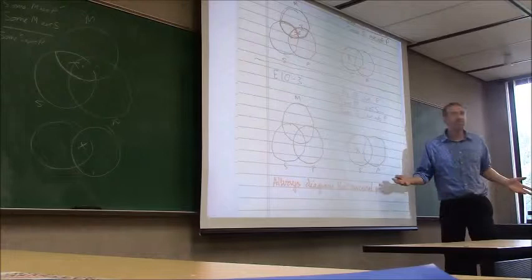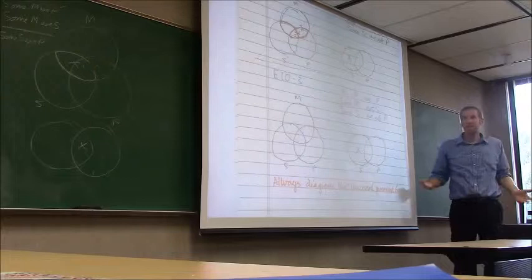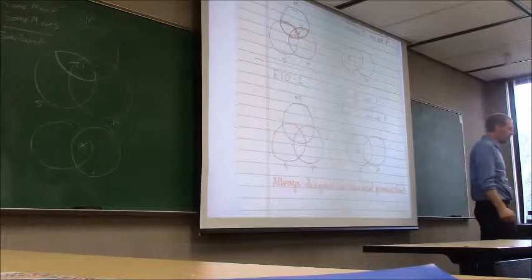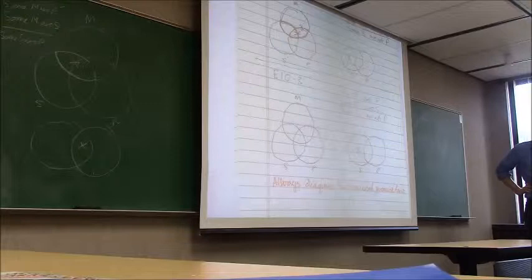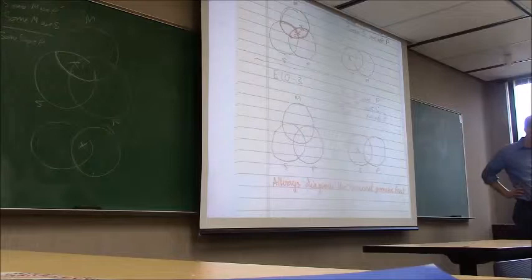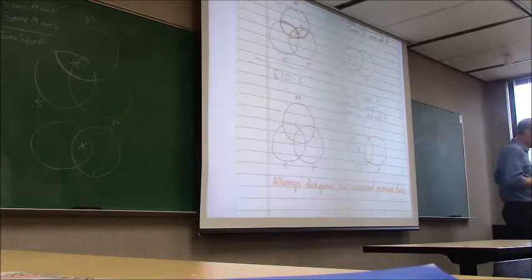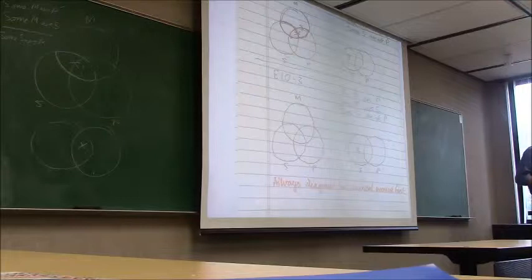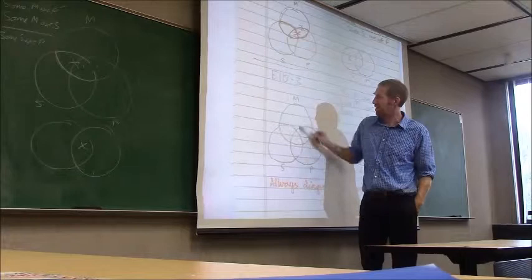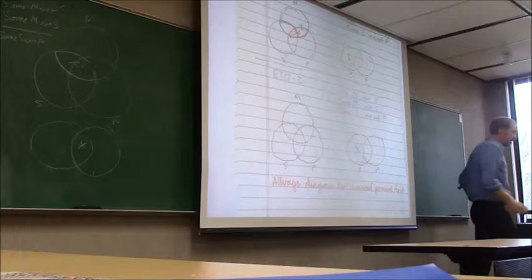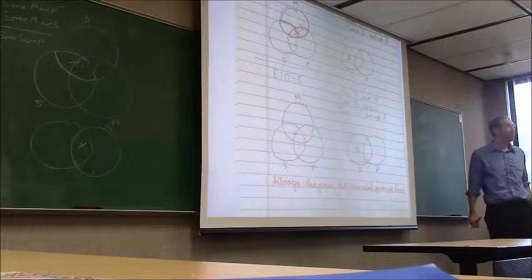So which premise do we diagram first — the major or the minor? The major, because it's universal. Let's see what happens if I do it the wrong way and diagram the particular first. 'Some M are S' — X, in the cat's eye of M and S, on the line of P. Would the argument now appear valid or invalid? It would appear invalid, because there's an X in the conclusion region but only half an X in the premises. And you can't fix it with the other premise since that one involves shading, not an X.